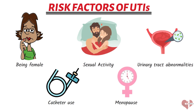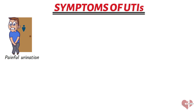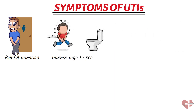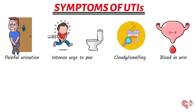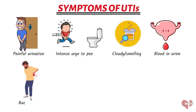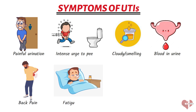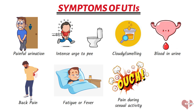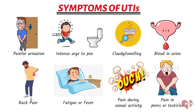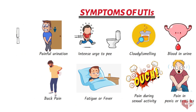Urinary tract infections can cause a range of uncomfortable symptoms that vary depending on the location of the infection. The most common symptoms include pain or burning when you pee, a frequent and intense urge to pee even when little or no urine is produced, cloudy or strong-smelling urine, pain or pressure in the lower abdomen or back, fatigue or fever, pain or discomfort during sexual activity in women, and pain or discomfort in the penis or testicles in men.